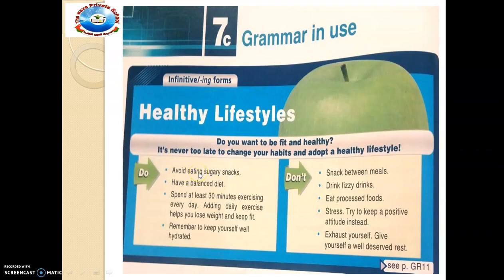For example, 'avoid eating' — this is an ING form. 'Try to' — this one is the to-infinitive. Now let's go to exercise one.